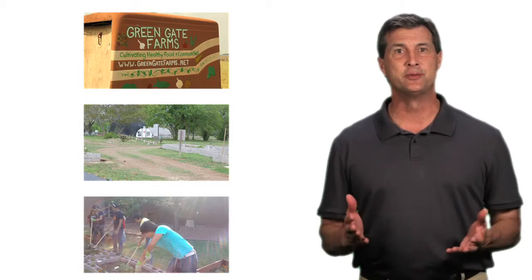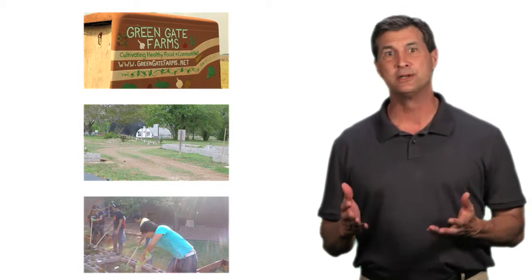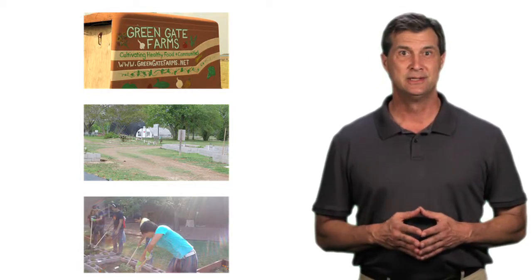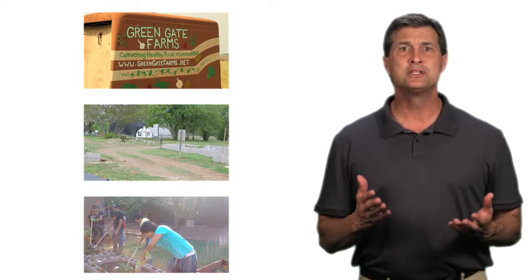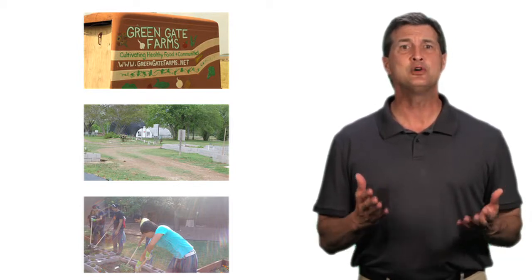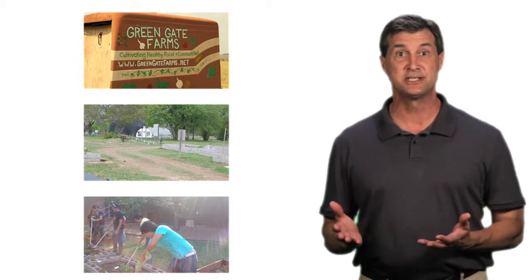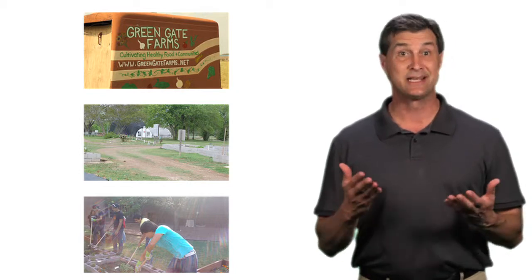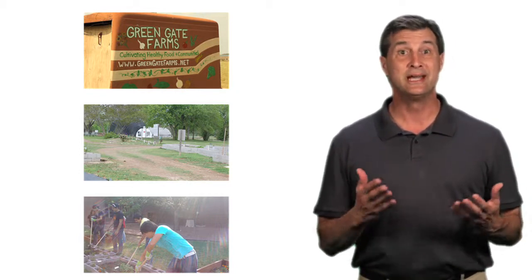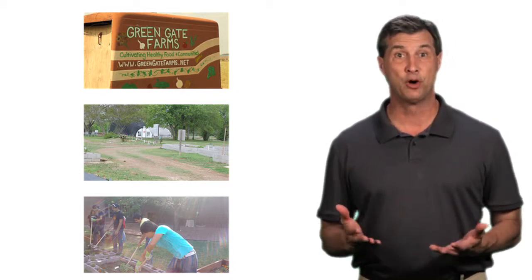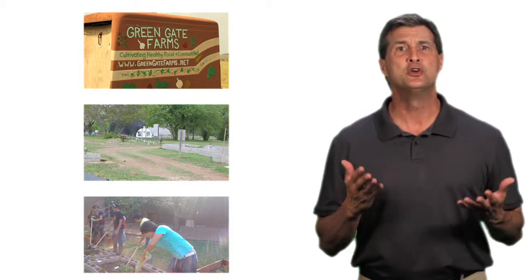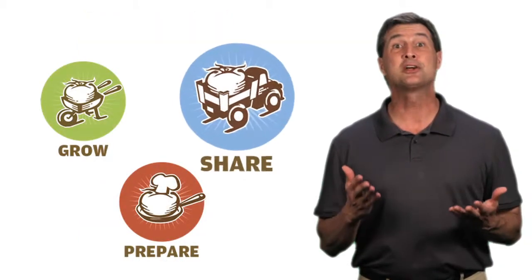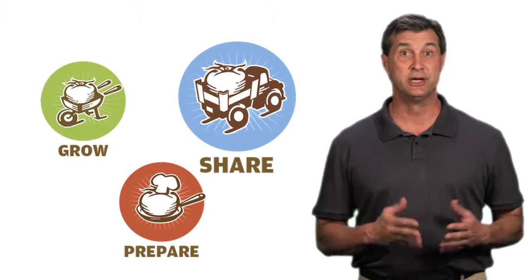As we've seen in this chapter, every aspect of food production contributes something different and important to a community food system. At the same time, each one supports the same core requirements for a successful system: food that's physically accessible, affordable, and culturally appropriate, and a consumer who's knowledgeable and skilled. Next, we'll look at the share component of a community food system.